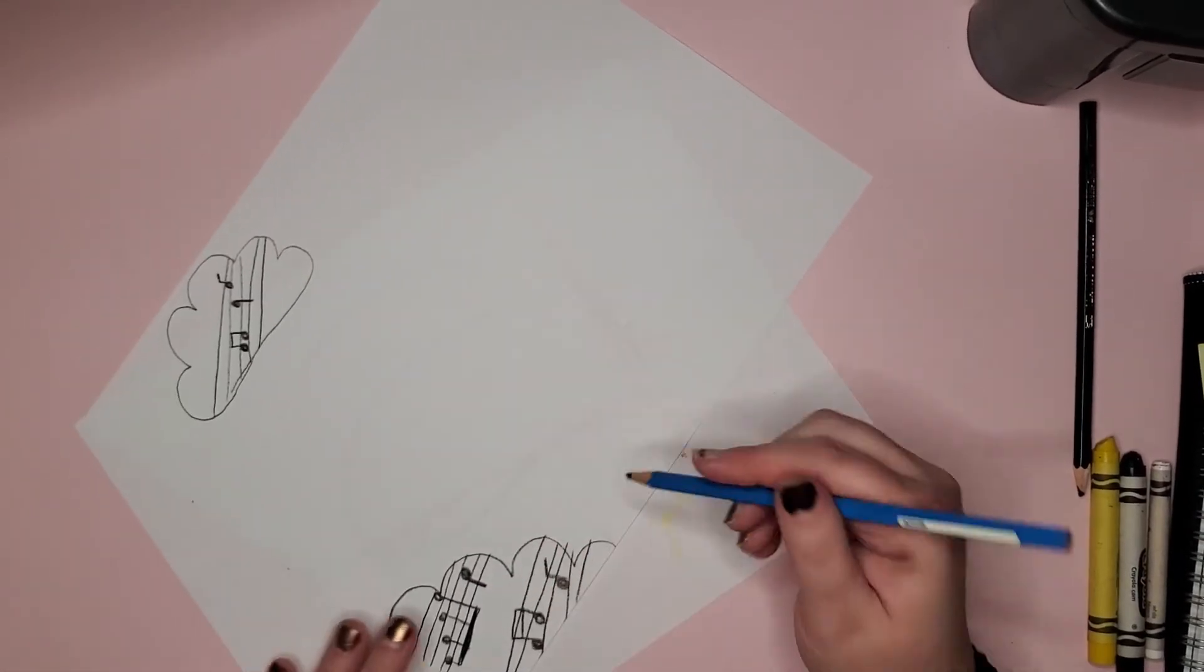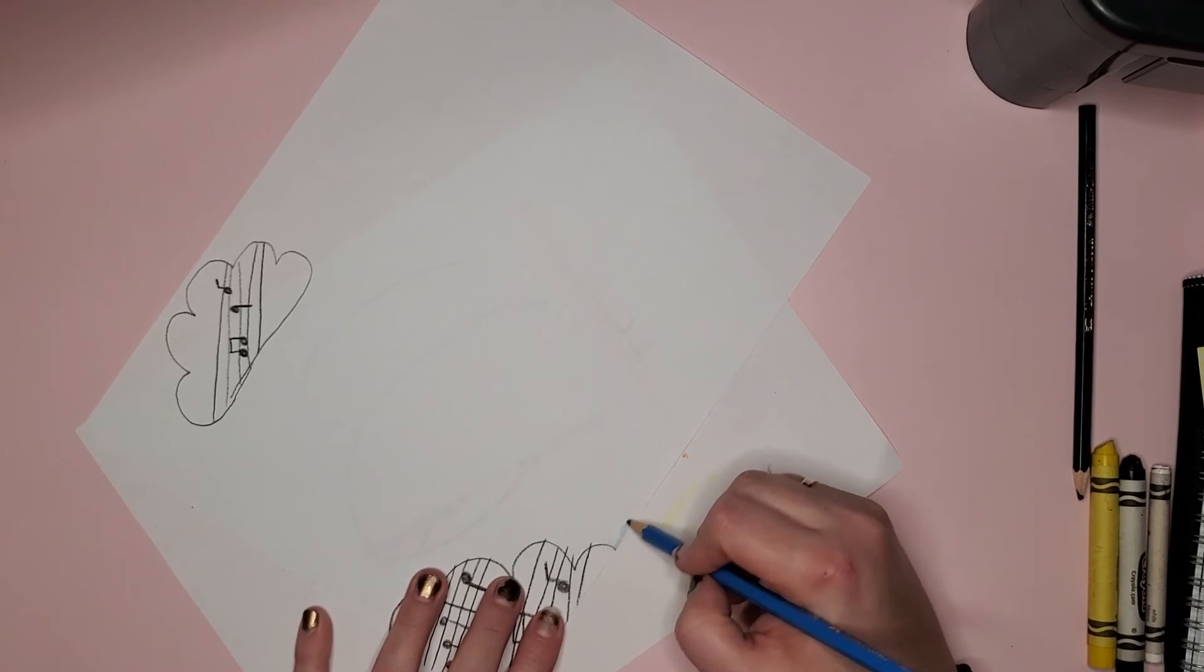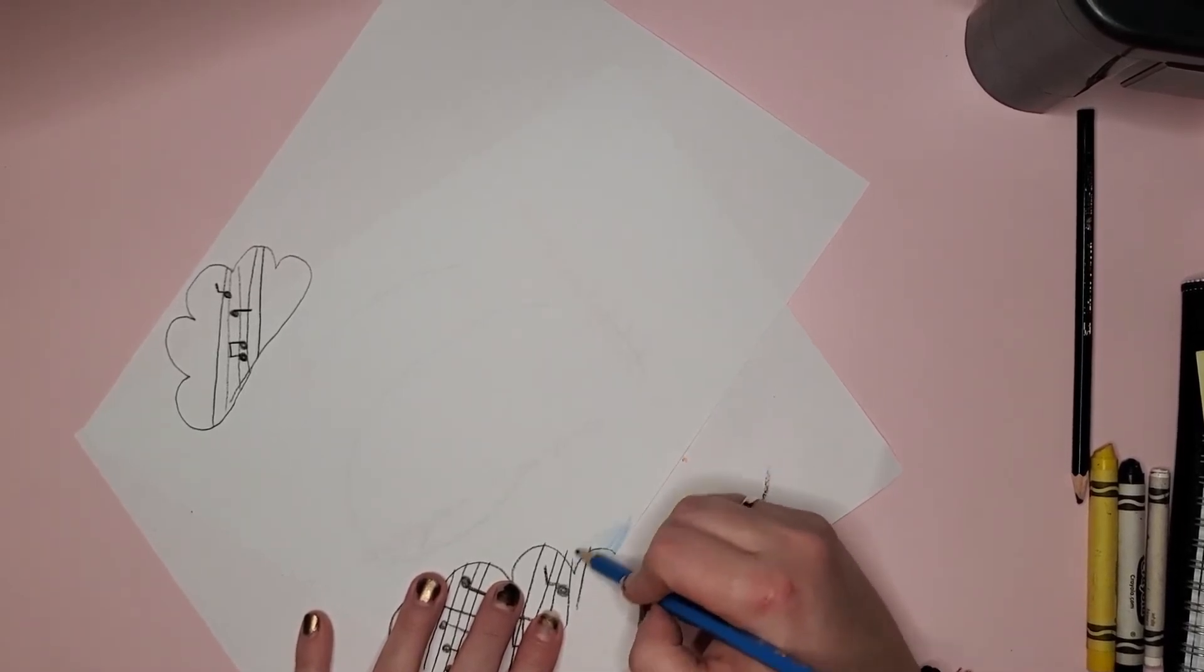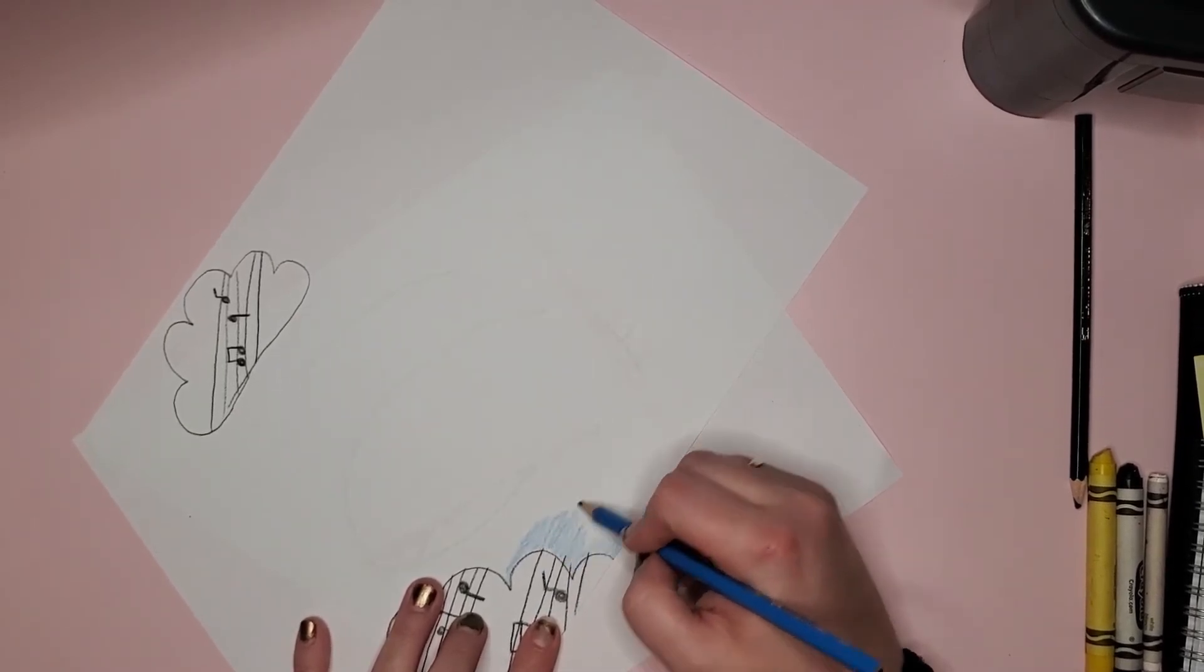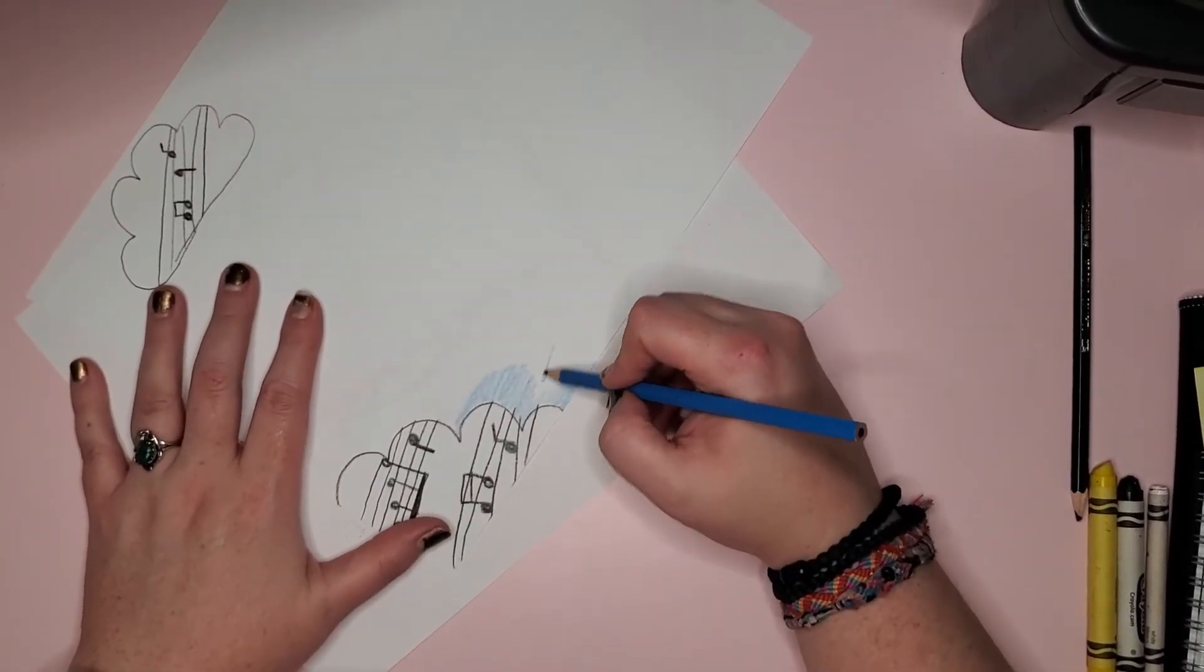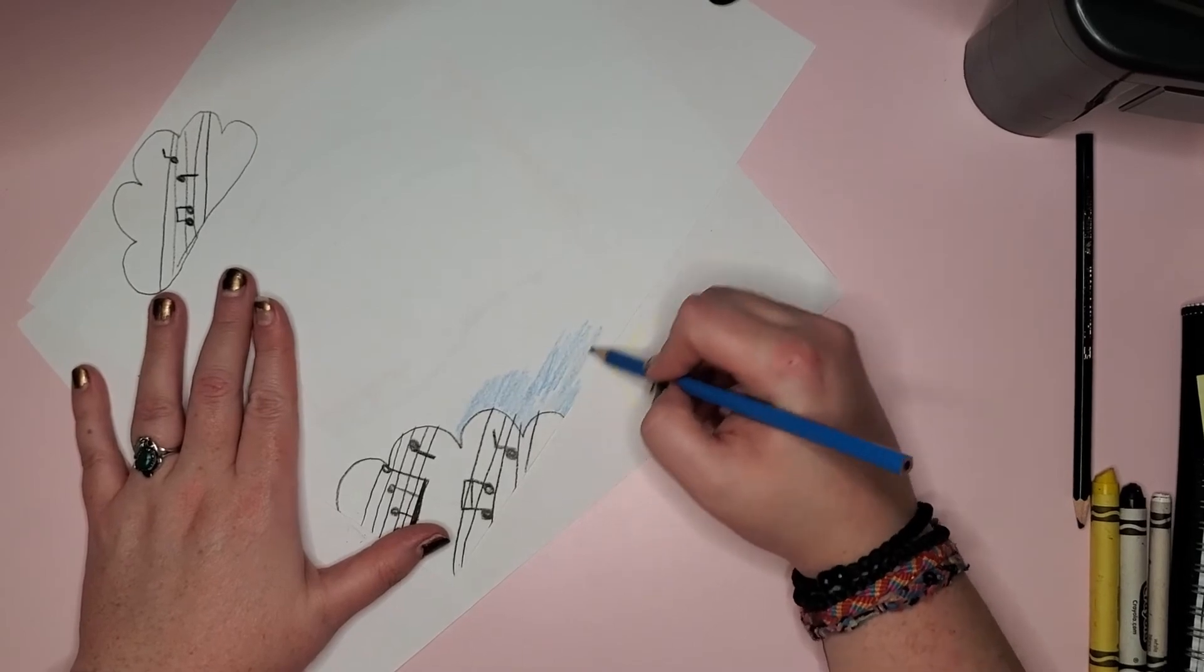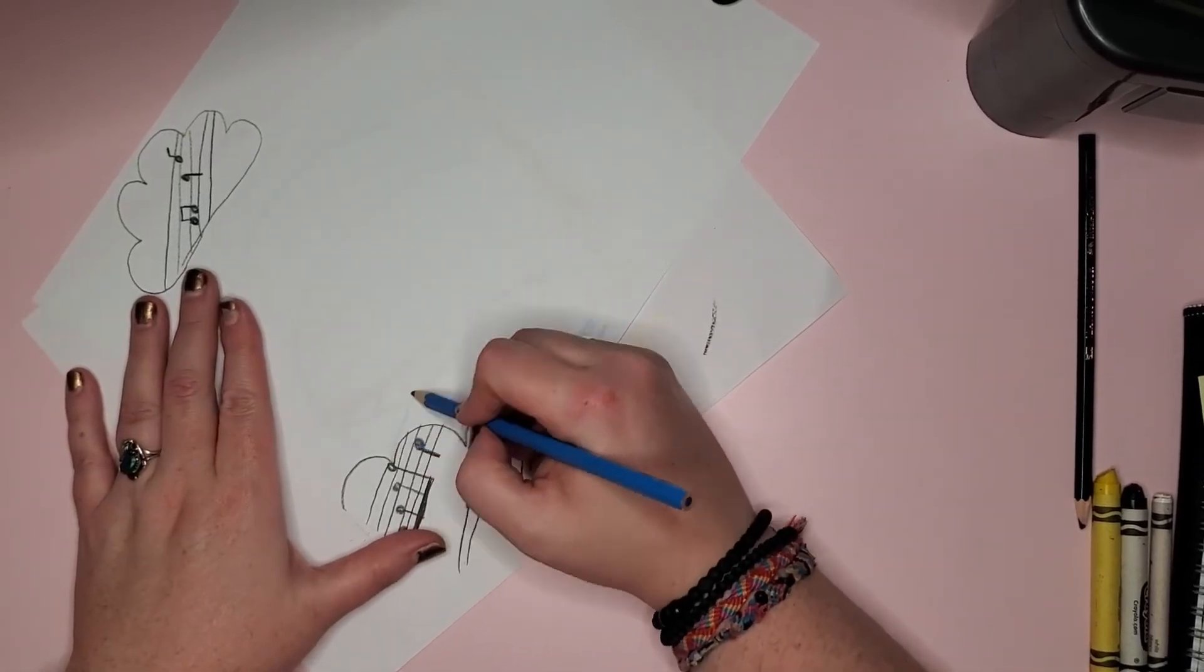And then you're going to take your colored pencil, and this is what's going to take you a really long time: color around your clouds, whatever background color you have.